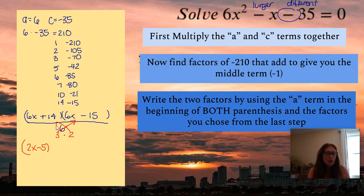And then the other one will be divisible by the other number, which is 2 in this case. So 6x divided by 2 is going to give me 3x. And 14 divided by 2 is going to give me positive 7. So there I have my factors.